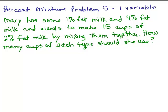We're going to do this percent mixture problem using one variable. Mary has some 1% fat milk and some 4% fat milk and wants to make 15 cups of 2% fat milk.